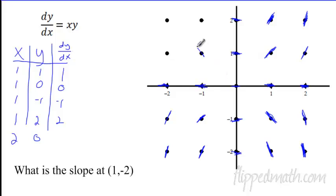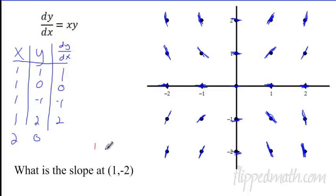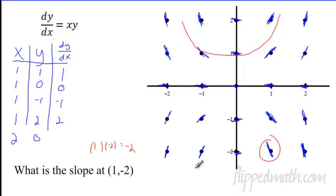At (-1,1) the slope is negative 1; at (-1,2) it's negative 2. So you can see the general shape here. If I pick some point — for example, at (1,-2) — I plug in 1 times negative 2, and the slope is negative 2. So the slope of the tangent line right there is negative 2. You can kind of see the family of functions here — they actually look like parabolas, but with a flat line in the middle. It looks a bit different depending on whether you're above or below the x-axis.